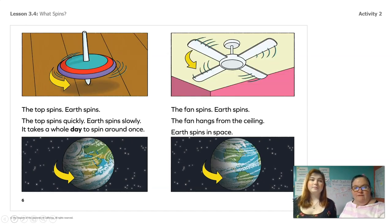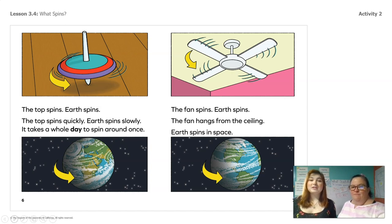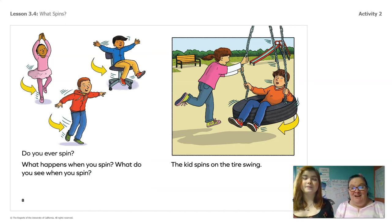The top spins. Earth spins. The top spins quickly. Earth spins slowly — it takes a whole day to spin around once. The fan spins. Earth spins. The fan hangs from the ceiling. Earth spins in space. Earth spins. I'm going to ask you guys questions on this next page and I want you to go ahead and answer. Go ahead and tell me what you think.